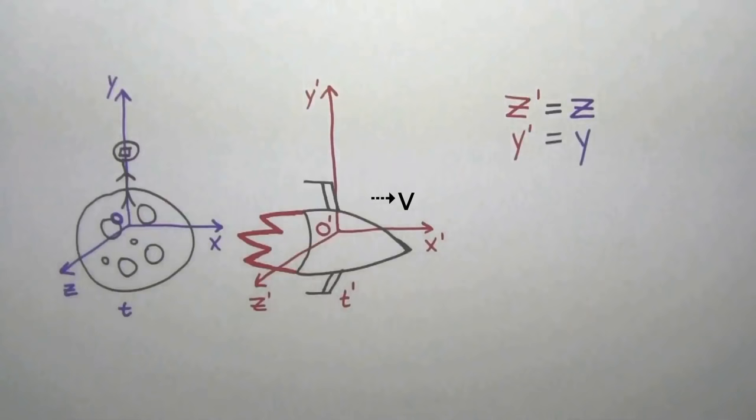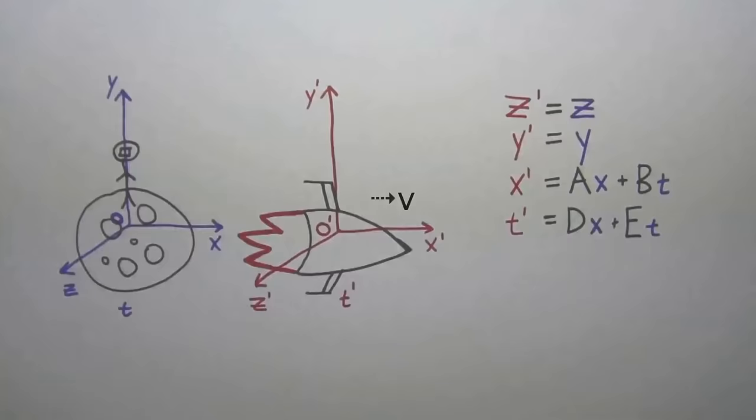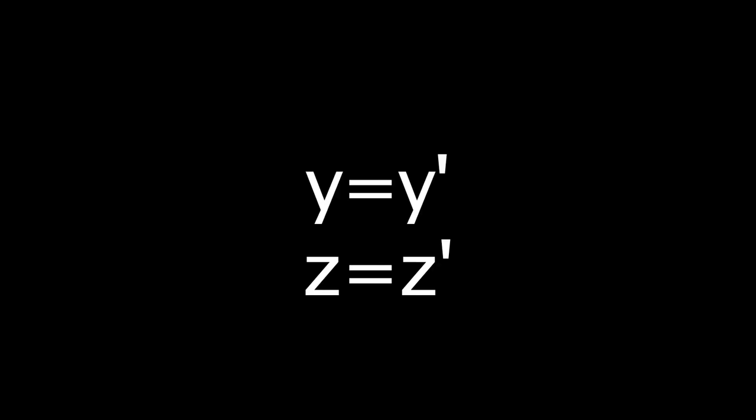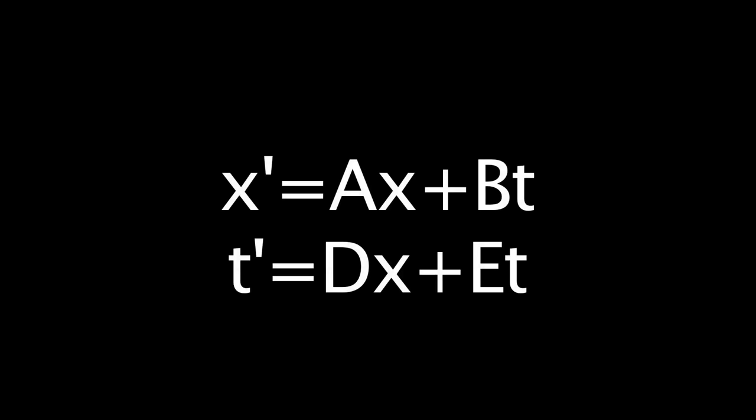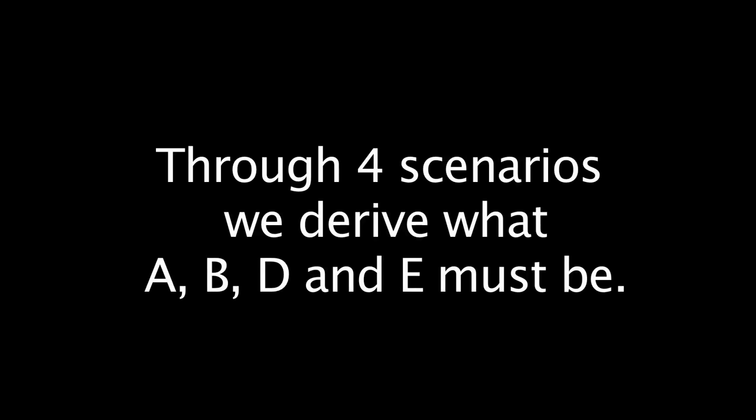To derive the Lorentz transformation, we need to start out with an arbitrary transformation. We initially start out with z prime equals z, y prime equals y, x prime equals ax plus bt, and t prime equals dx plus et. In special relativity, length only contracts in the direction of motion, so the coordinates y and z that are perpendicular to the direction of relative motion between frames are the same in both frames. For the x prime and t prime transformations, we take an arbitrary set of constants as coefficients for our x and t, and through four scenarios, we derive what these coefficients have to be.